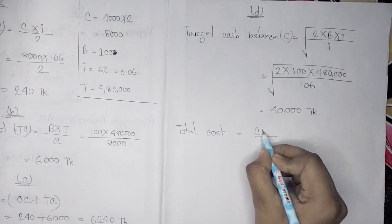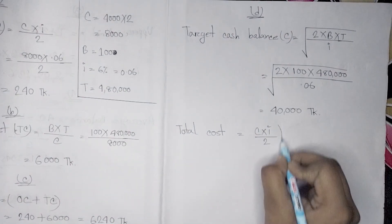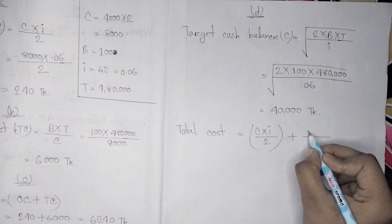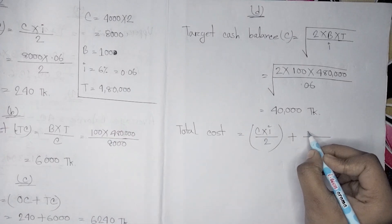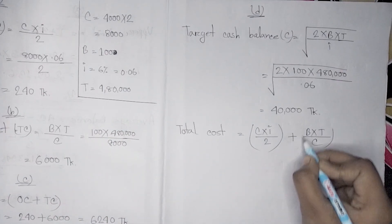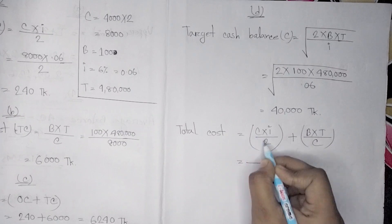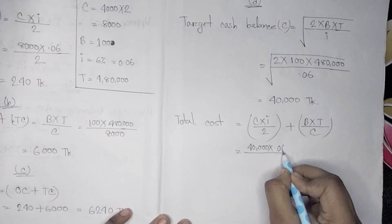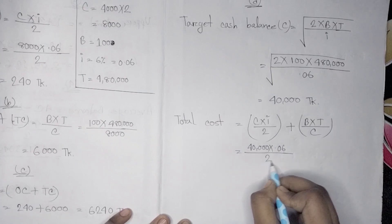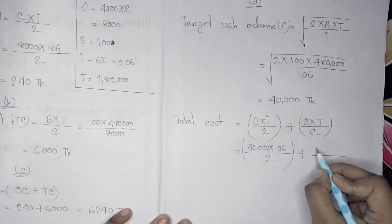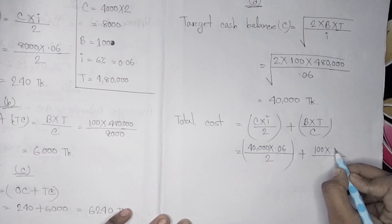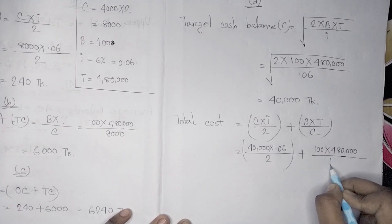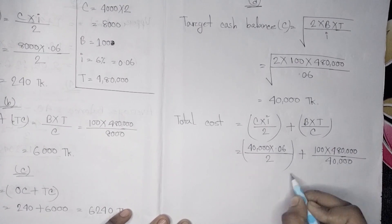The total cost formula has two components: opportunity cost, which is C times I divided by 2, and trading cost, which is B times T divided by C. Here C is 14,000, I is 0.06 divided by 2, plus B is 100, T is 480,000, and C is 14,000.